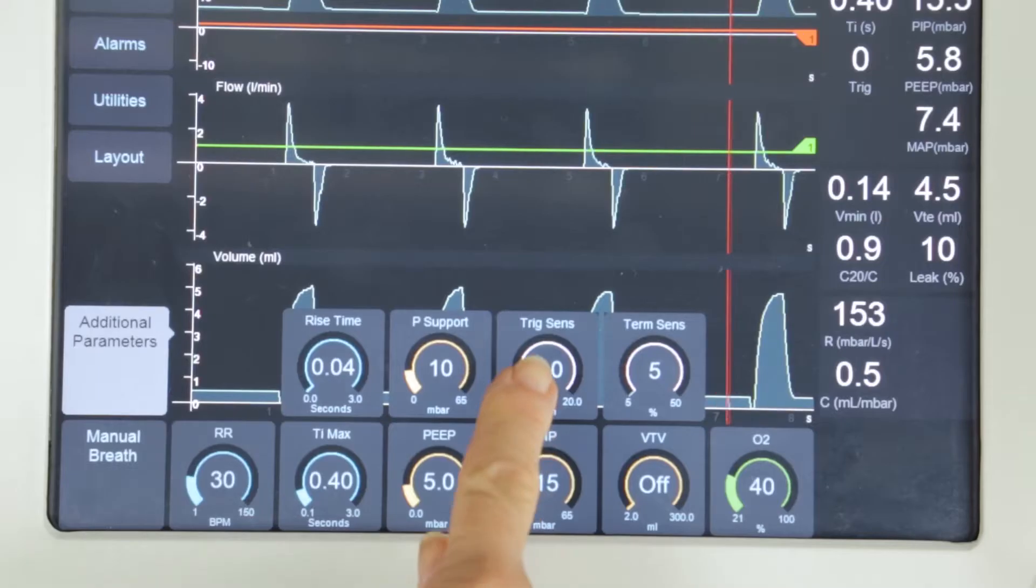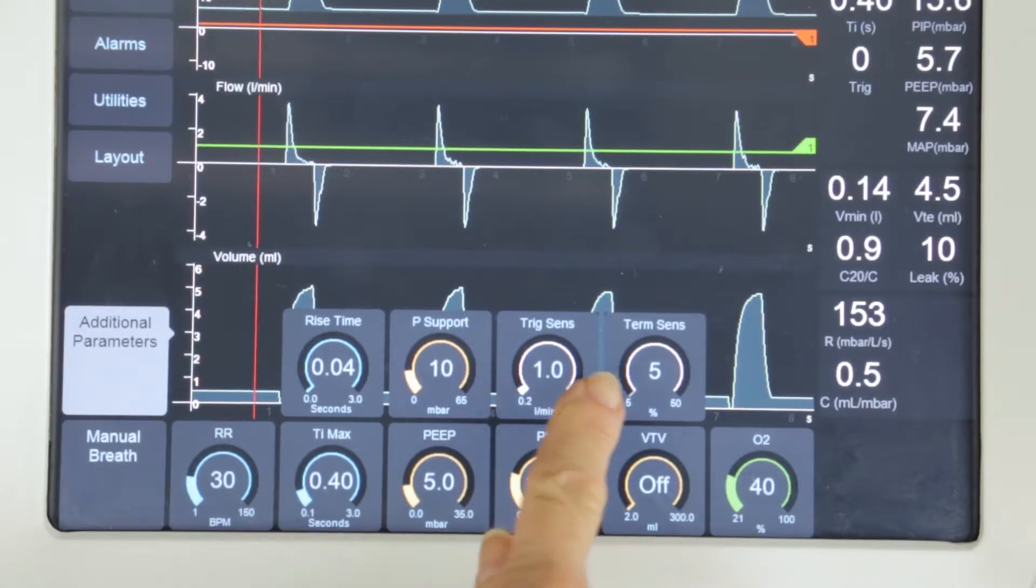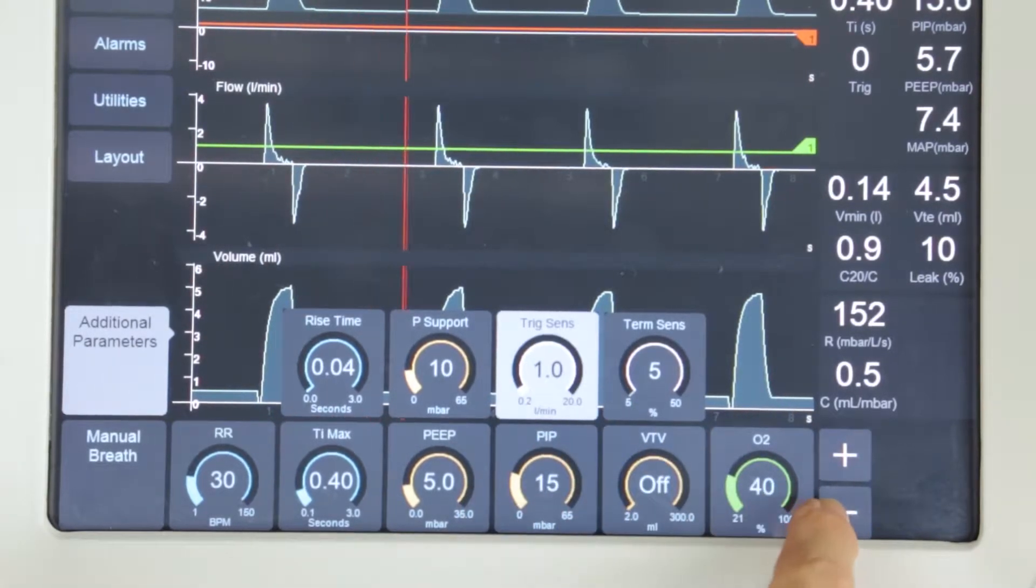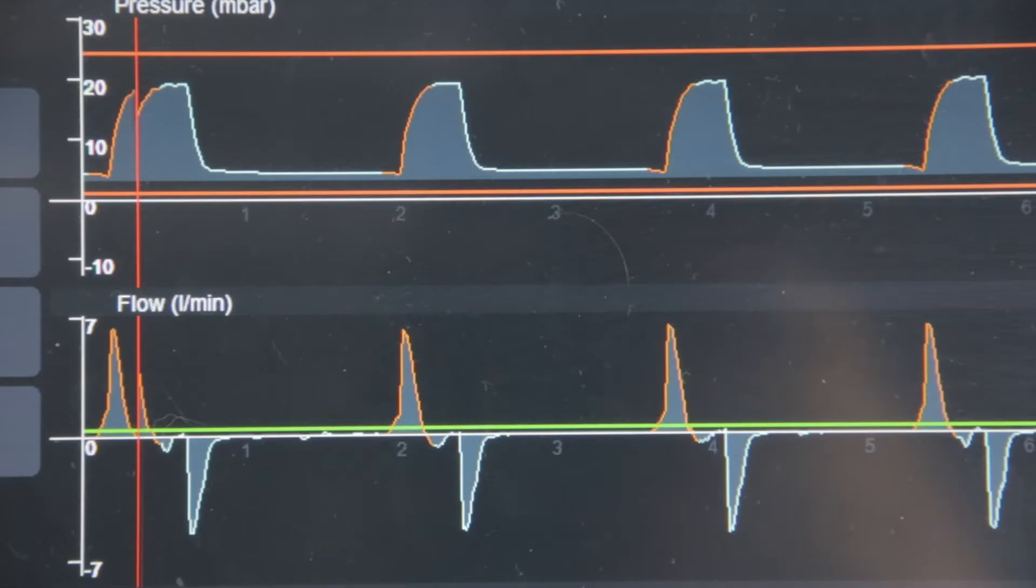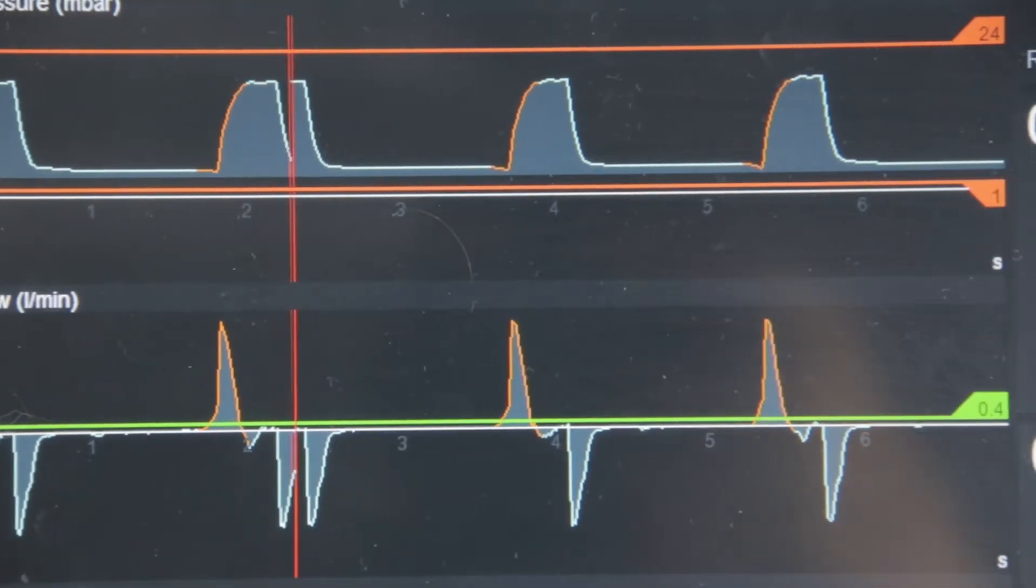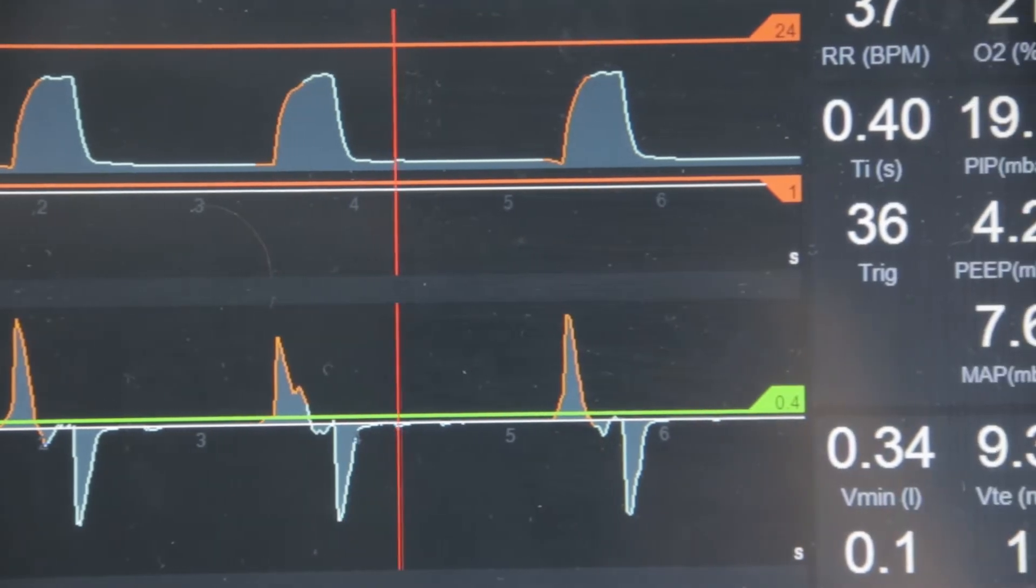Under Additional Parameters, set the inspiratory trigger threshold. The default setting is 0.6 liters per minute. Press the Confirm button once everything has been set, and ensure that the infant is actually triggering the ventilator.